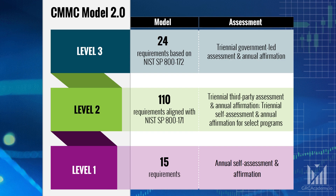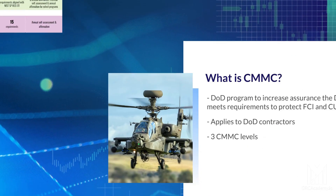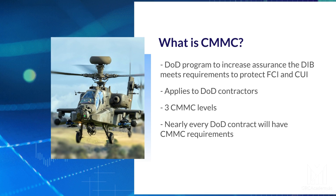Level 3 is required for DoD's most critical contracts that involve CUI, and it has 24 enhanced security requirements from NIST 800-172. We'll talk about each of these levels more in future lectures. Nearly every DoD contract will have CMMC requirements that specify a CMMC level the contractor must have to be awarded a contract. After the CMMC rulemaking process is complete and the final rule is issued, DoD will begin to add CMMC requirements to contract solicitations, and CMMC compliance or certification will become a requirement to win almost any DoD contract.